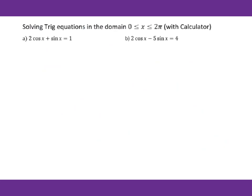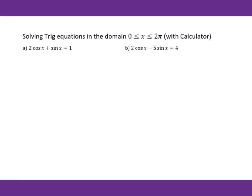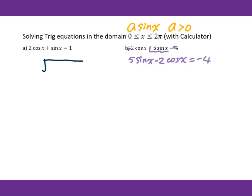Now let's go to part b. First, we need the a·sin(x) pattern with a > 0 in the first position. We have sin(x) but the number beside sin(x) is negative, so we change the signs of everything and reorder the position. We get 5sin(x) − 2cos(x) = −4. Then working on a² + b²: 5² + (−2)² gives √29, so we divide by √29.